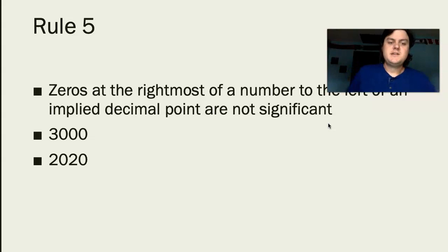Rule 5 states zeros at the rightmost of a number to the left of an implied decimal point are not significant. The number 3000—hopefully you can make some connections back to the measurement activity we've been working on—but there is only one significant figure in the number 3000. The other three zeros—the three is significant, it's a non-zero digit—the other three zeros are placeholders. They're telling us that we have three as a significant digit, but we have three sets of 1000. The other zeros in this number are just placeholders showing us what magnitude that significant figure has.